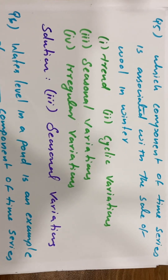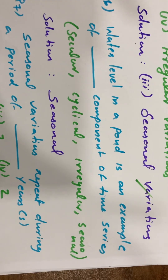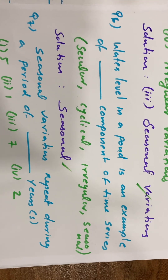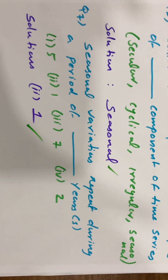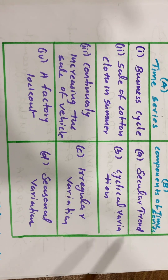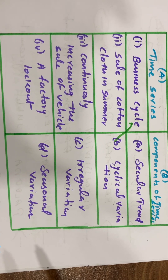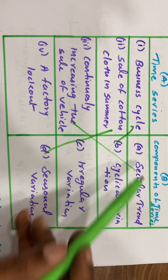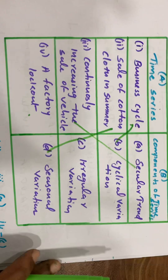Which component of the time series is associated with the sale of wool in winter? That is seasonal variation. Water level in a pond is an example of a seasonal component. Seasonal variation repeats during a period of one year. A factory lockout is an example of irregular variation in the time series.